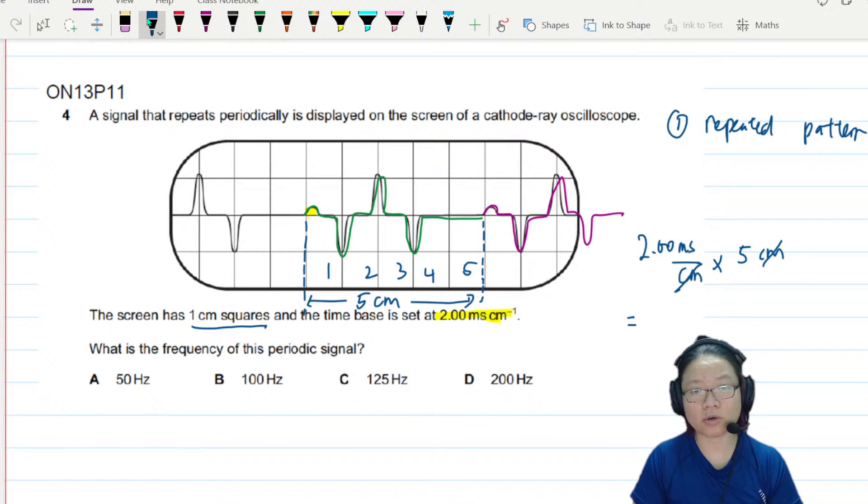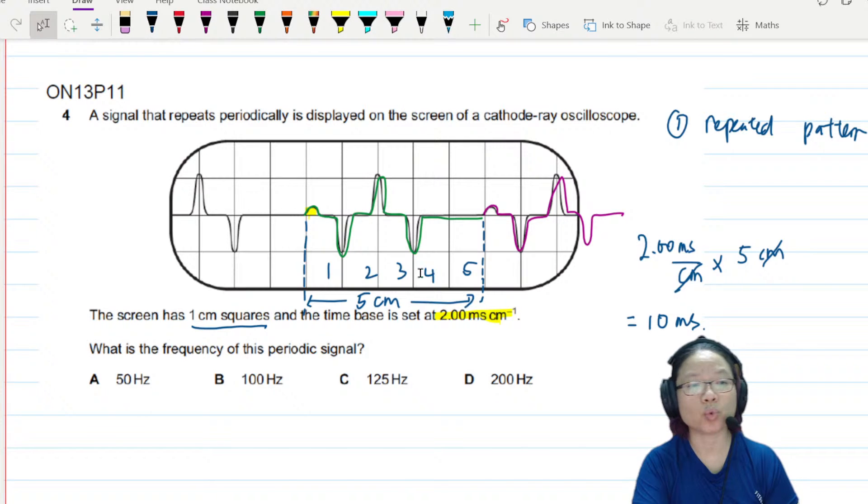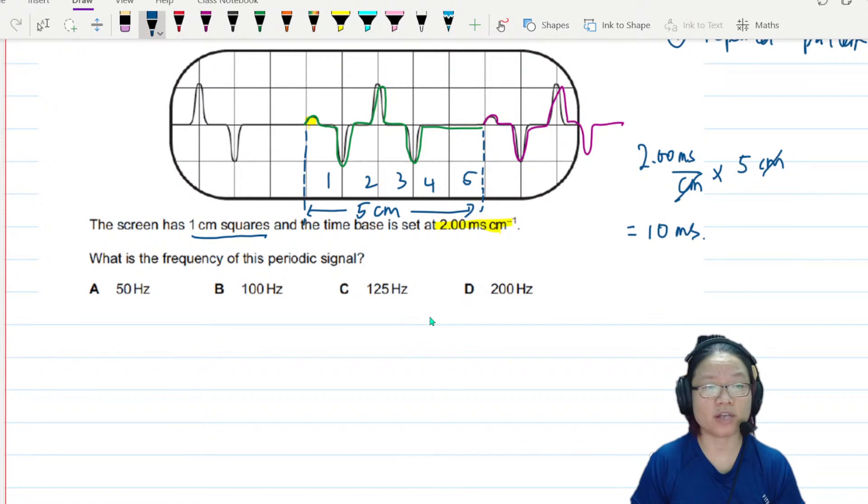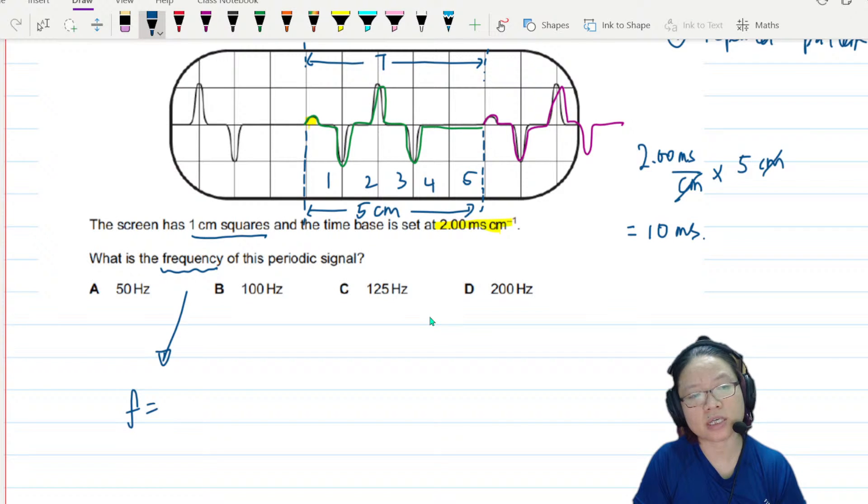And finally what you have is 10 milliseconds. But this is the period—here to here happens to be your period. So they want to find frequency. Recall that frequency is 1 over period. So I'll take 1 over 10, times 10 to the power of negative 3.